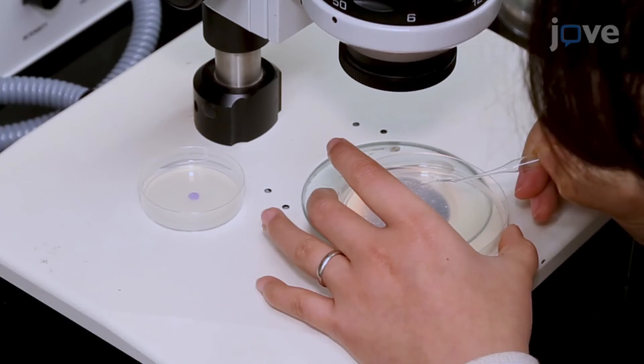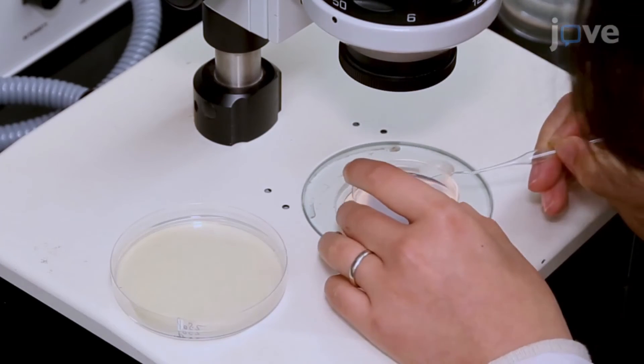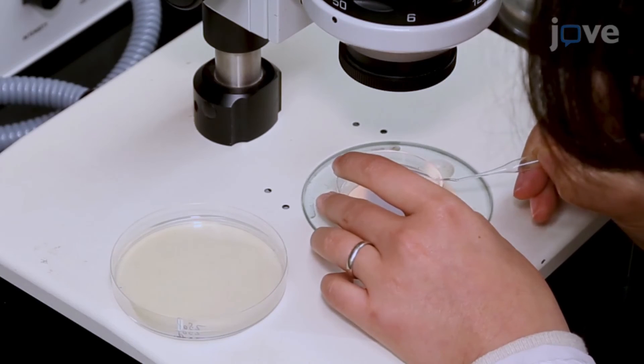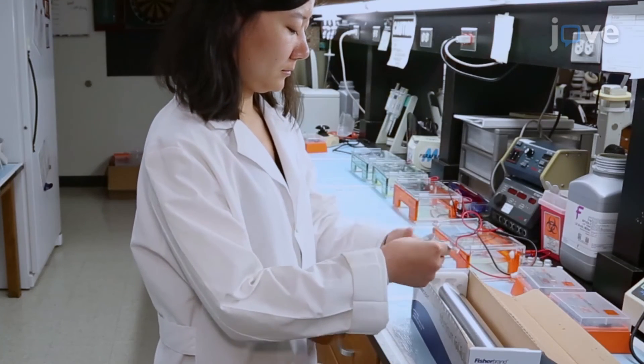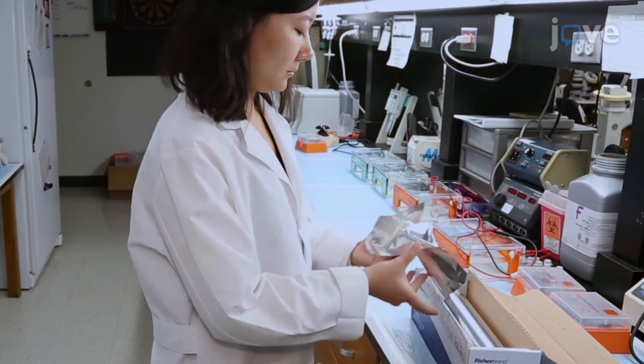Pick approximately 100 males to the mitodye stained food dot on the male staining plate. Wrap the plate in aluminum foil and incubate overnight at 16 degrees Celsius.